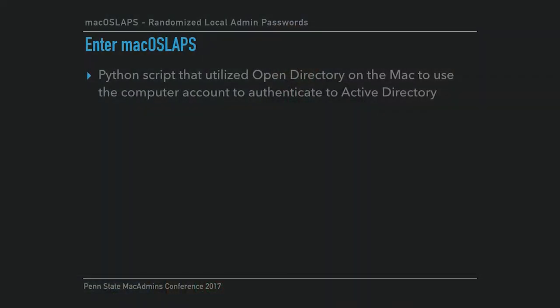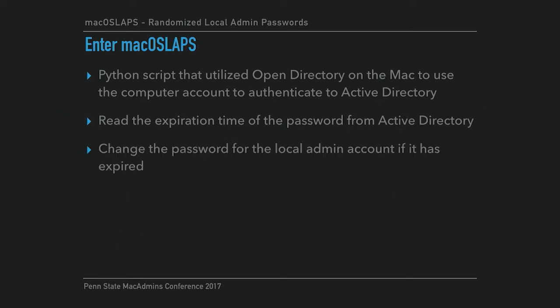We had to figure out how time was calculated with Active Directory. Windows has its own unique way of calculating time in Active Directory versus Linux and macOS. That's where macOS LAPS was born — it's a Python script that uses Open Directory on the Mac, so it can use your Active Directory bound computer account to authenticate. It reads the expiration time from Active Directory; if there isn't one, it sets a default of January 1, 2001 to force a change. Then it changes the password if expired and sets a new expiration time, writing both values back to Active Directory.